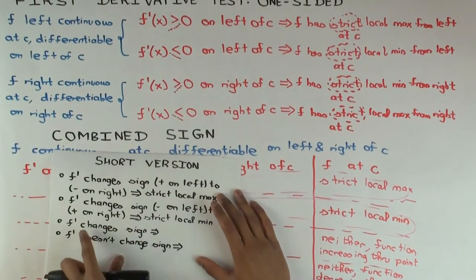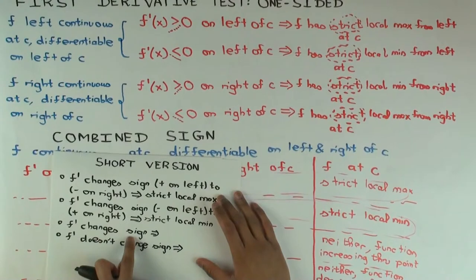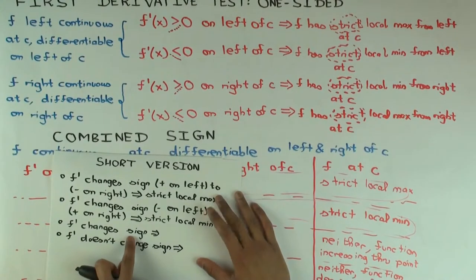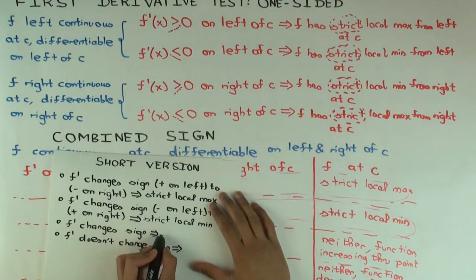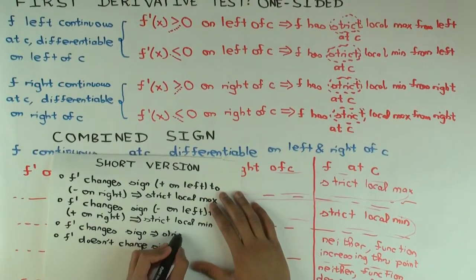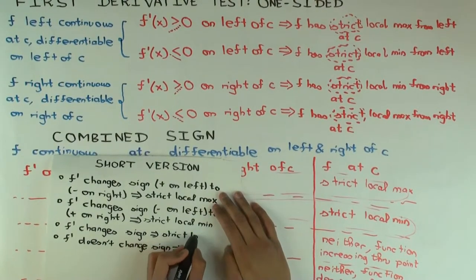What happens if I just say f prime changes sign above the point? Well, depending on how it changes sign, it's maximum or minimum, but you can say from this, if it changes sign, you do have a strict local extrema of some kind, depending on how the sign changes.